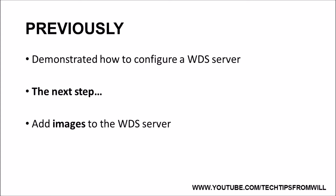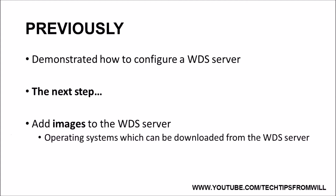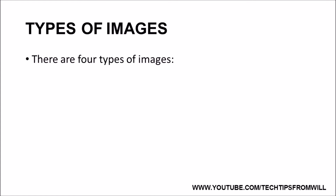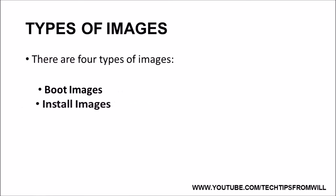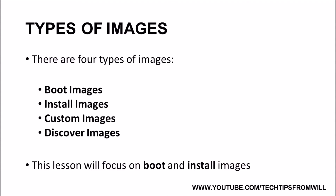Images, in a nutshell, are essentially the operating systems which can be downloaded from the WDS server and installed onto client computers. There are four types of images which can be added to a WDS server: boot images, install images, custom images, and discover images. To keep things simple, for this lesson I will focus on just two of the image types, namely boot images and install images.